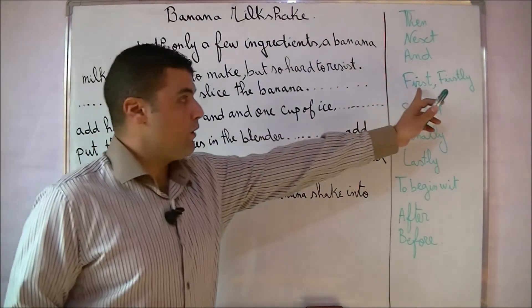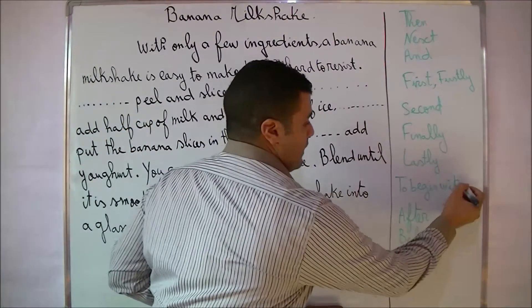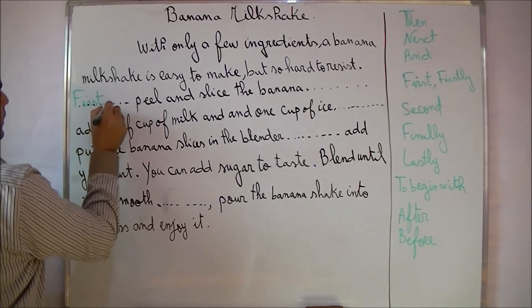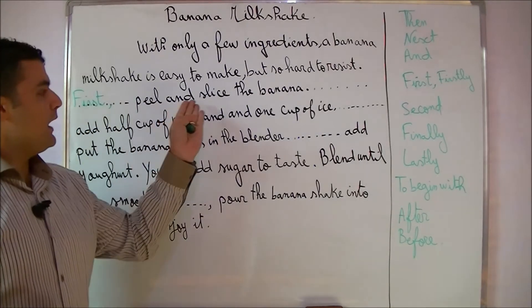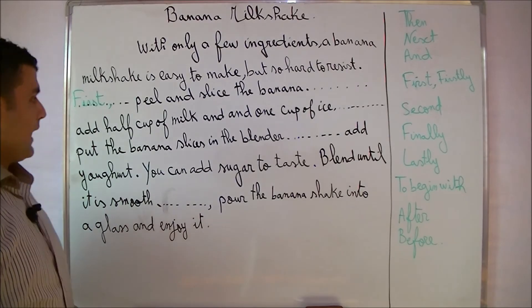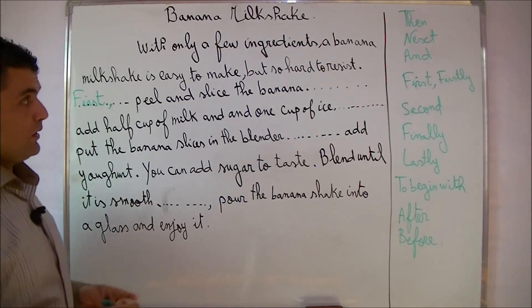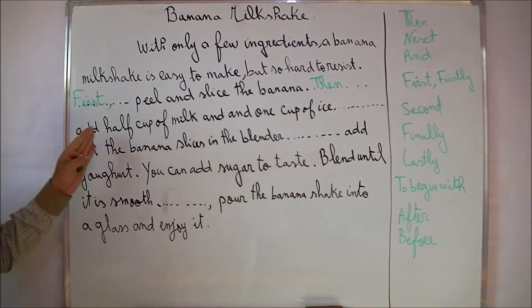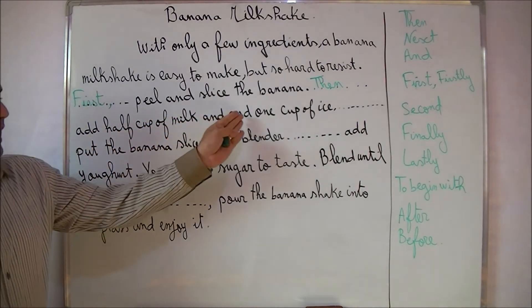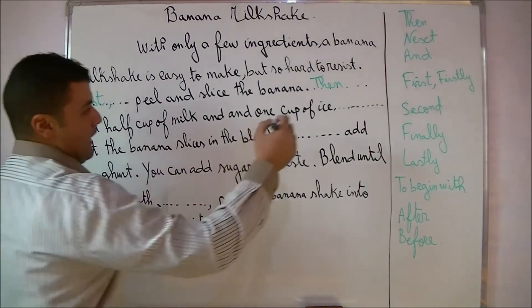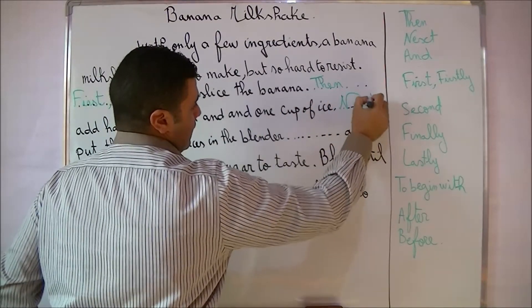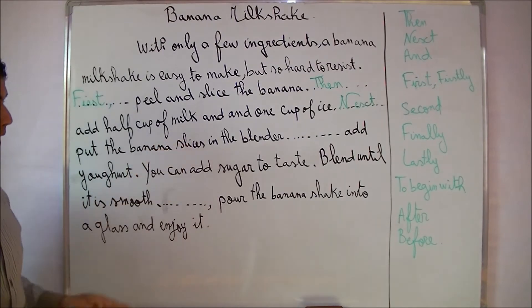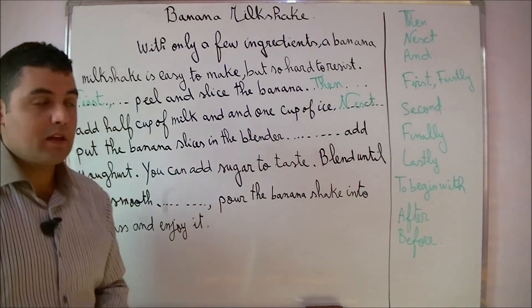For the first blank we can say 'first' or 'to begin with.' So: 'First, peel and slice the banana.' For the next step, we use 'then' — 'Then add half a cup of milk and one cup of ice.' After that, we say 'next' — I'll use 'then' and 'next' interchangeably. 'Next, put the banana slices in the blender.'